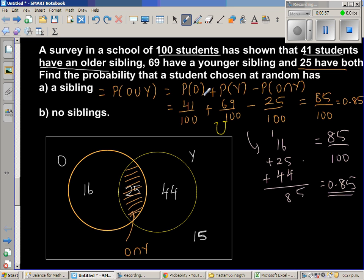And what's the probability that a student chosen at random has no sibling? These are the 15 students who have no sibling. So for B, the answer would be 15 out of 100. This is 15% or as a decimal, this is 0.15. Thank you.